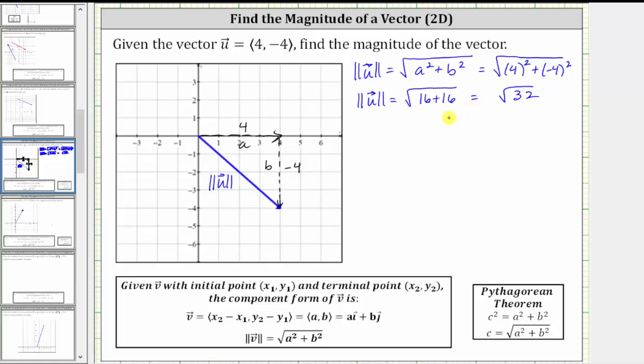Now you may be asked to express the magnitude using a decimal approximation or the exact magnitude. Let's go ahead and show both. For the exact magnitude, we need to simplify the square root of 32. 32 does have a perfect square factor of 16. 16 times two is equal to 32.